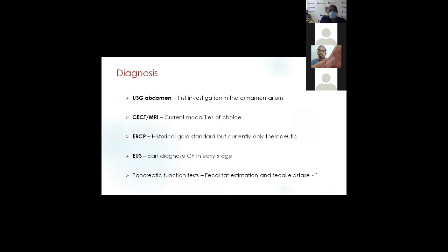In our unit, we use CECT abdomen as the gold standard. In cases where we suspect malignant overlay on chronic pancreatitis, we supplement with MRI, which is more efficient in picking that up. CECT tells you the size, shape, texture, density, ductal nature — whether uniformly dilated or chain-of-lakes appearance — and classically picks up calculi both intra-ductal and parenchymal. ERCP is only historical now and has a role only therapeutically, such as placing a stent in obstructed biliary tree. Endo-ultrasound is useful for biopsy of altered echotexture areas, aspiration of fluid collections, and early detection of disease changes.